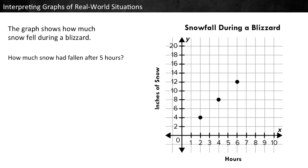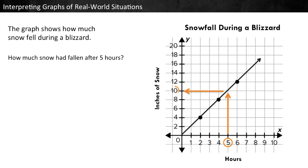How much snow had fallen after 5 hours? Locate 5 on the x-axis and move up until you hit the point — there's no point! Because this graph shows a steady change over time, we can draw a line connecting the points to help us. Now we can see how much snow had fallen at all the times between the points. Start at 5 on the x-axis, follow it up until you hit the line, then move left to find the y-coordinate: 10. 10 inches of snow had fallen after 5 hours.